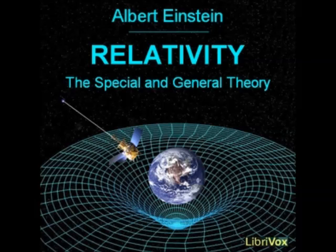The examination of the correctness, or otherwise, of this deduction is a problem of the greatest importance, the early solution of which is to be expected of astronomers. By means of the star photographs of two expeditions equipped by a joint committee of the Royal and Royal Astronomical Societies, the existence of the deflection of light demanded by theory was first confirmed during the solar eclipse of 29th May, 1919.